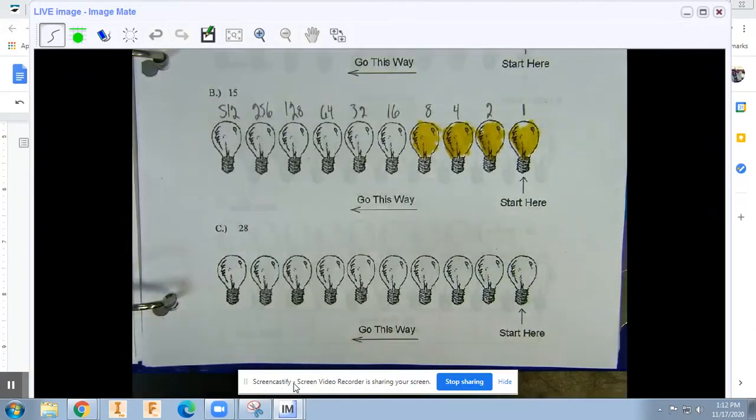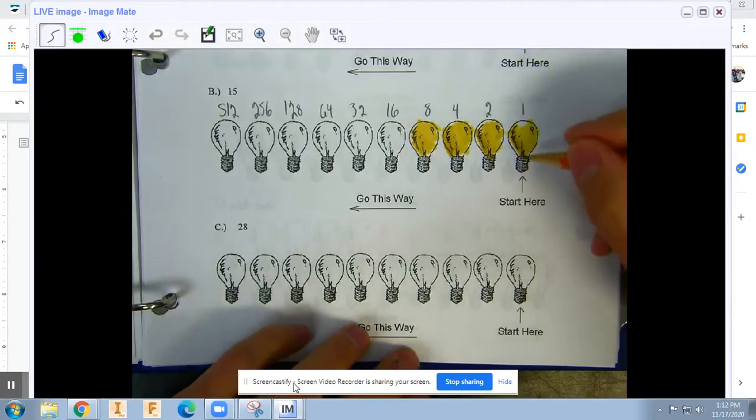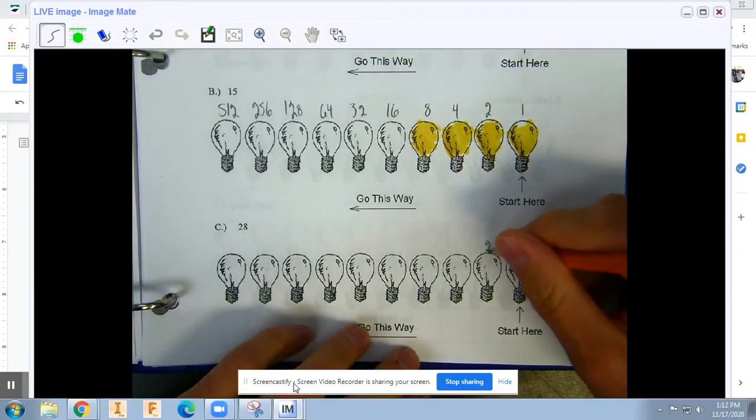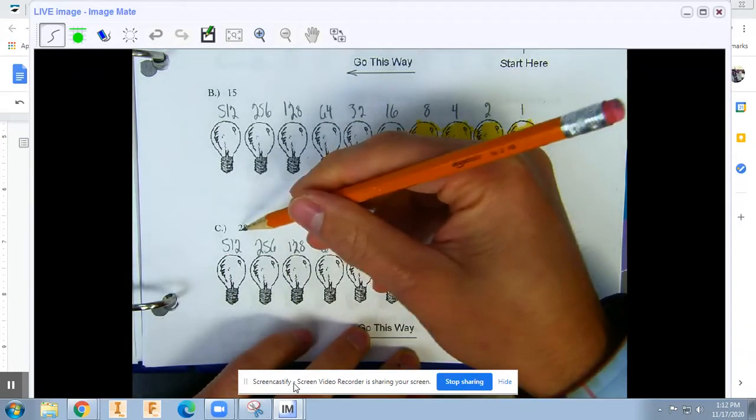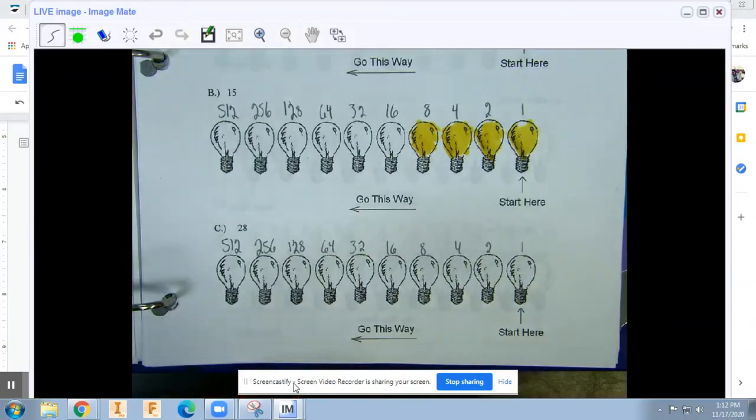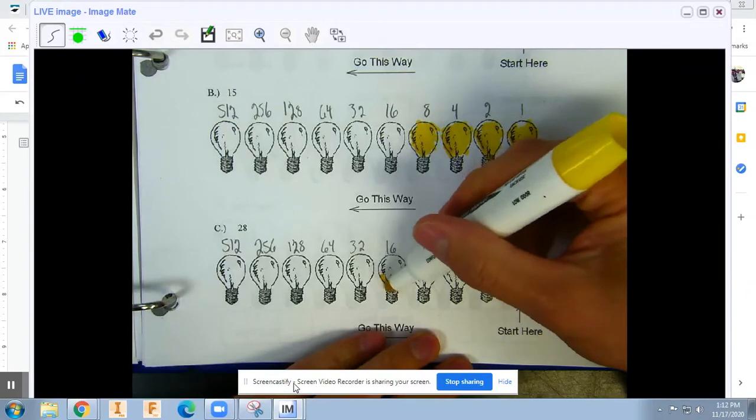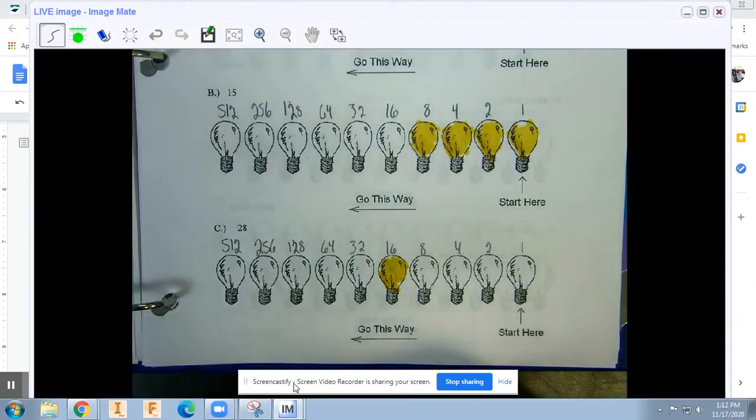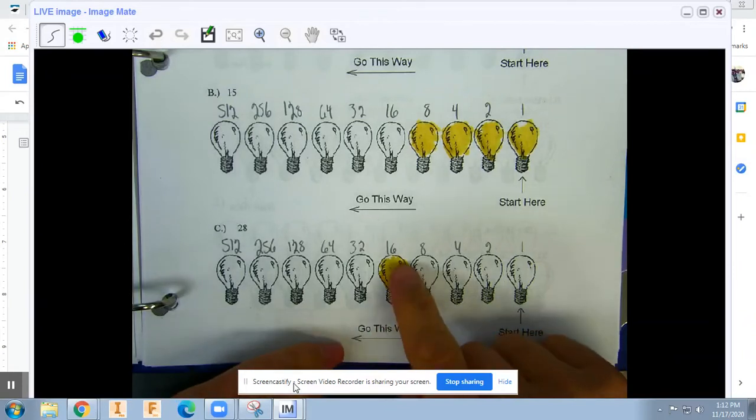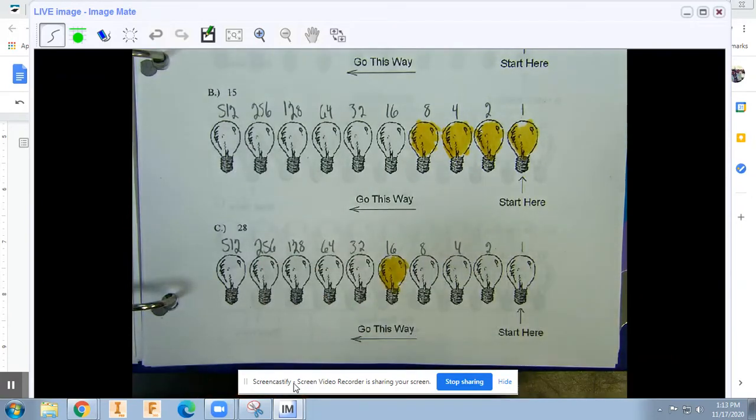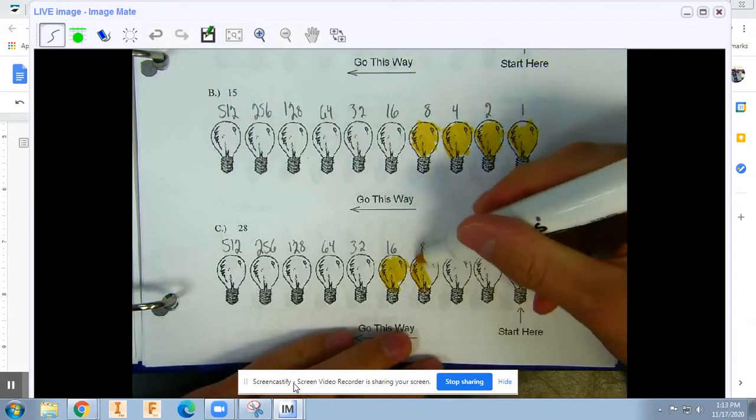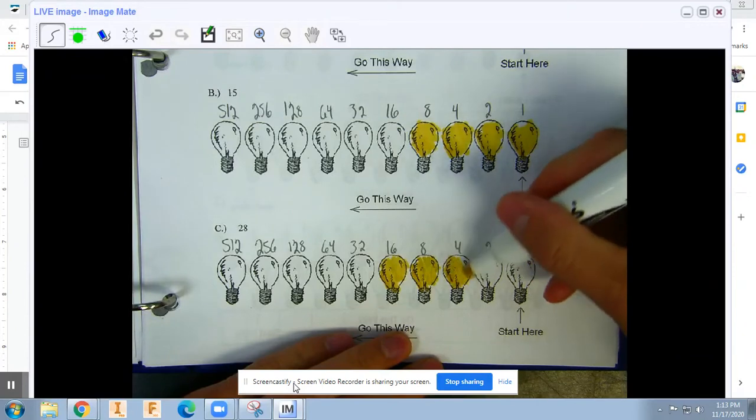Then the final example is 28. For 28, we're going to use the same numbers. Always use 1, 2, 4, 8, 16, 32. We're looking for 28, so we know that 16 has to be in there because it's the closest one to 28 that isn't more than it. What else could we add? If we added 8 and 4, that would be adding 12. 12 and 16 would be 28. So that's our answer: 16, 8, 4.